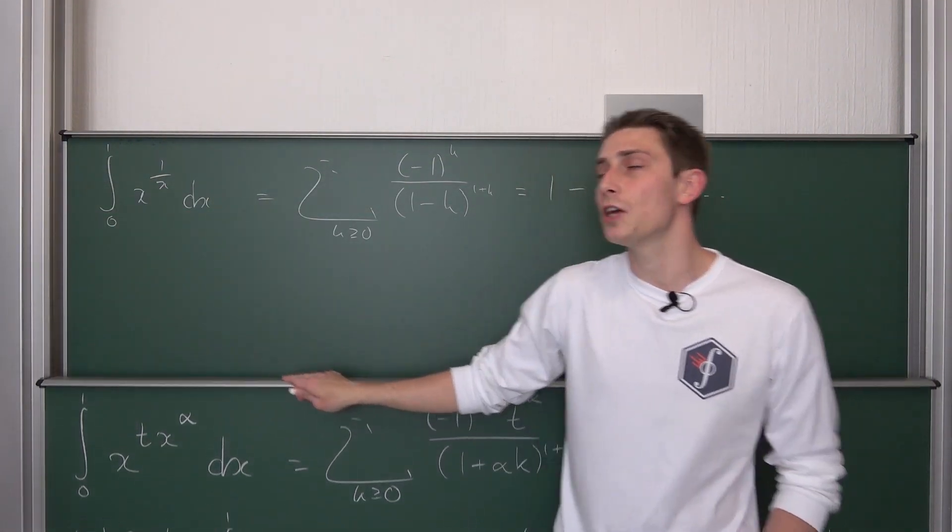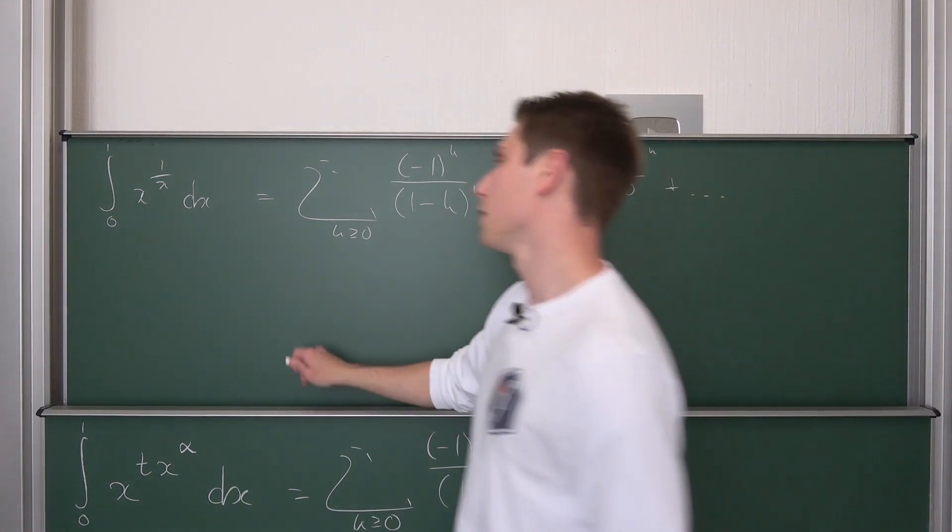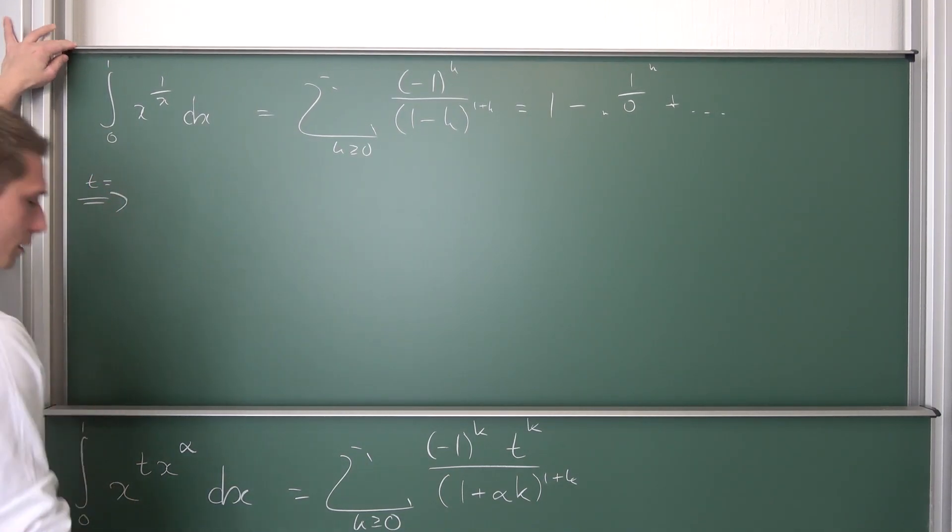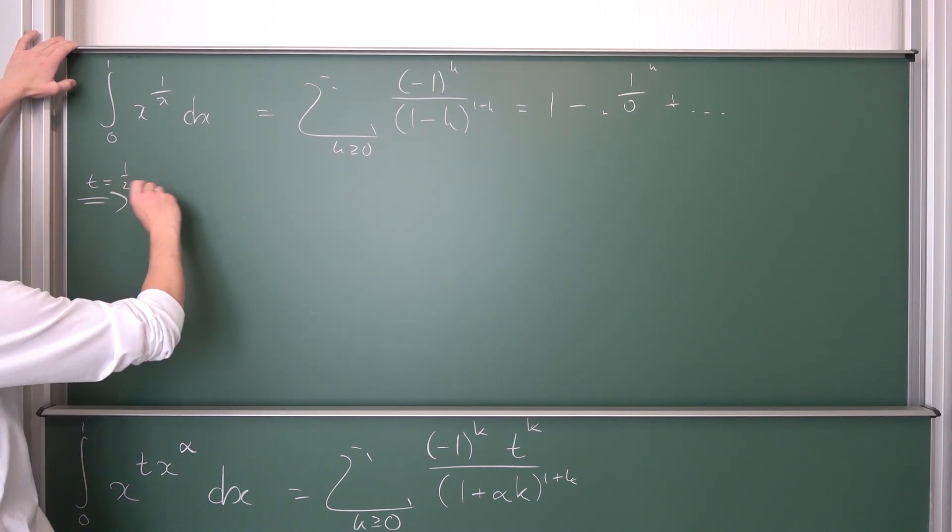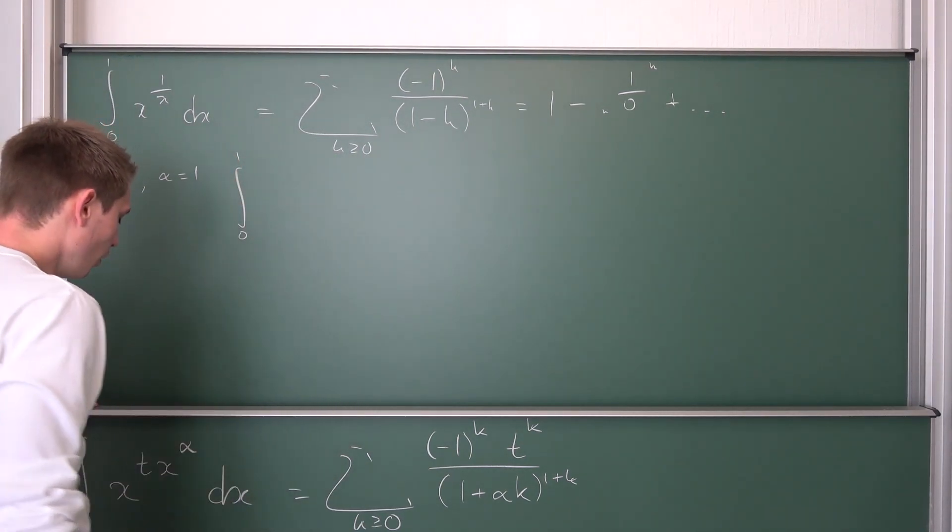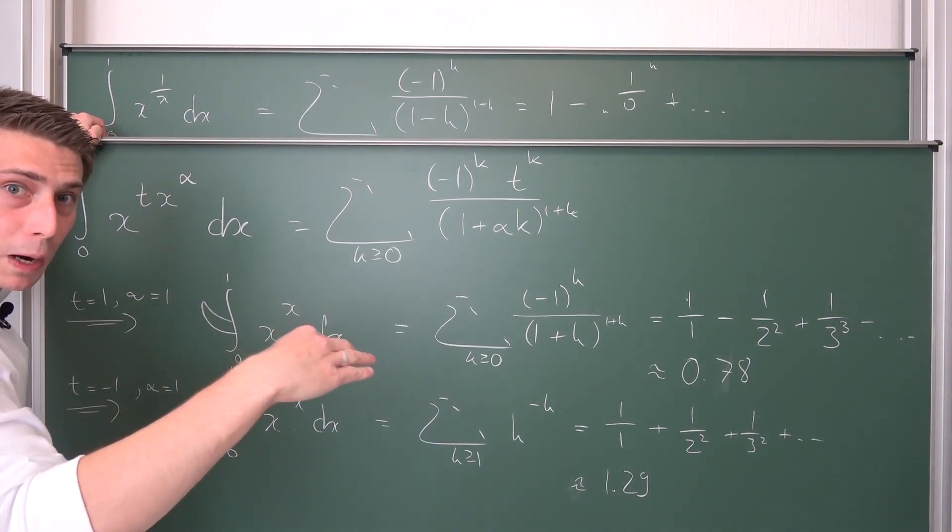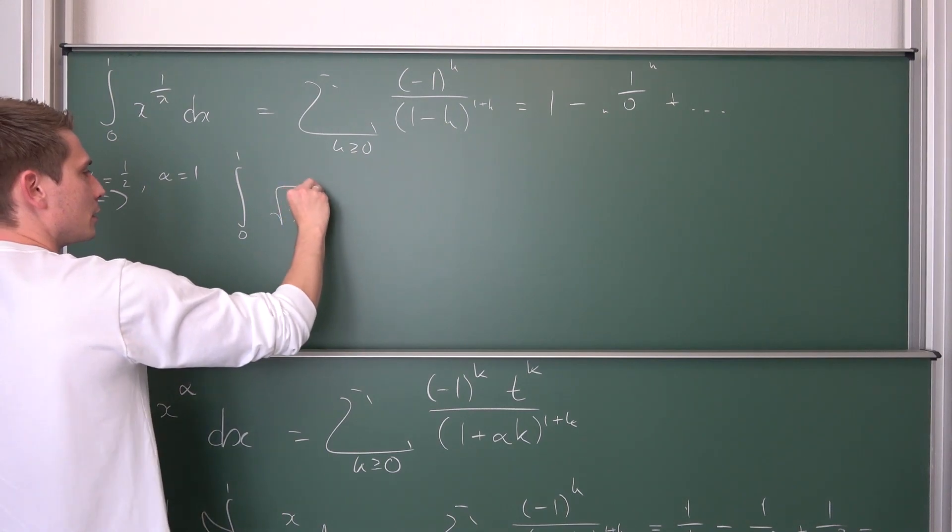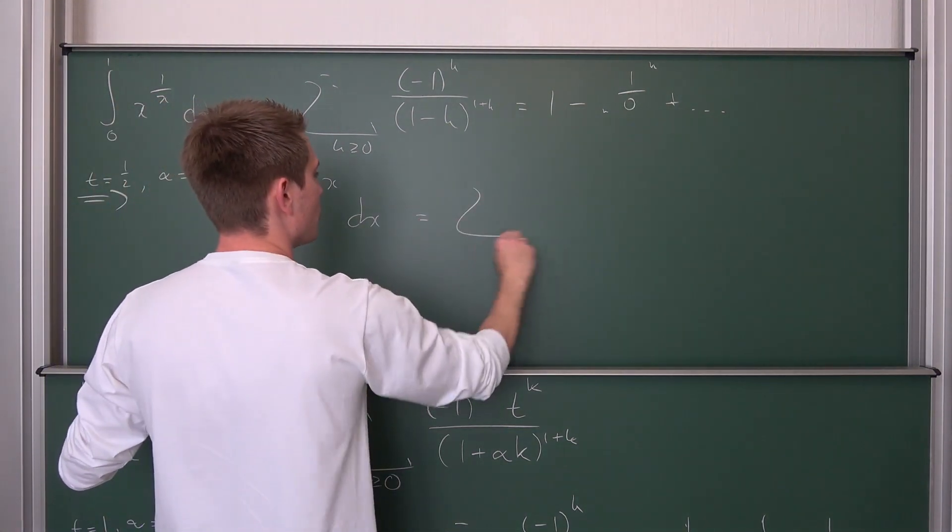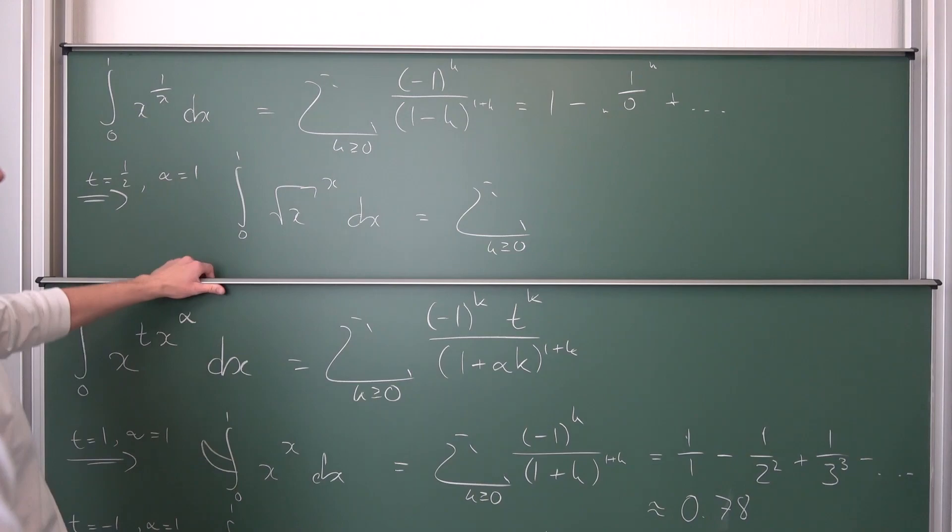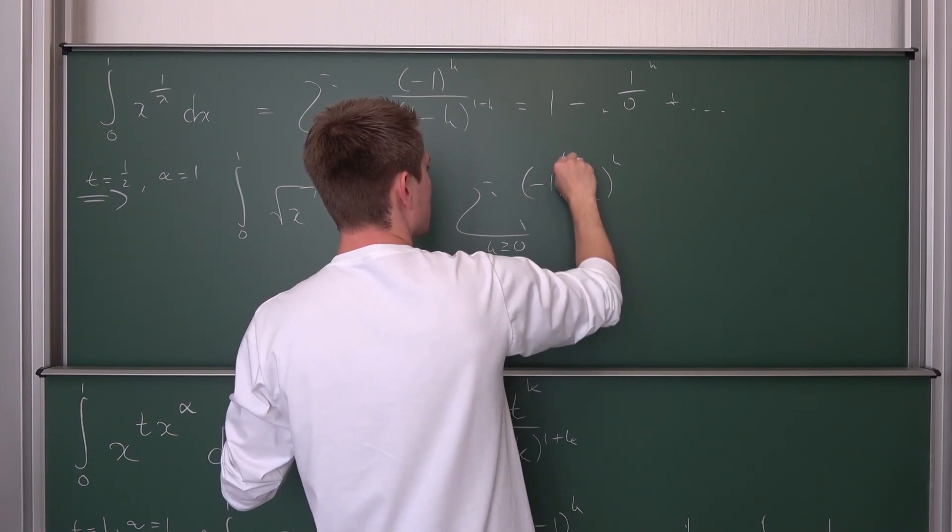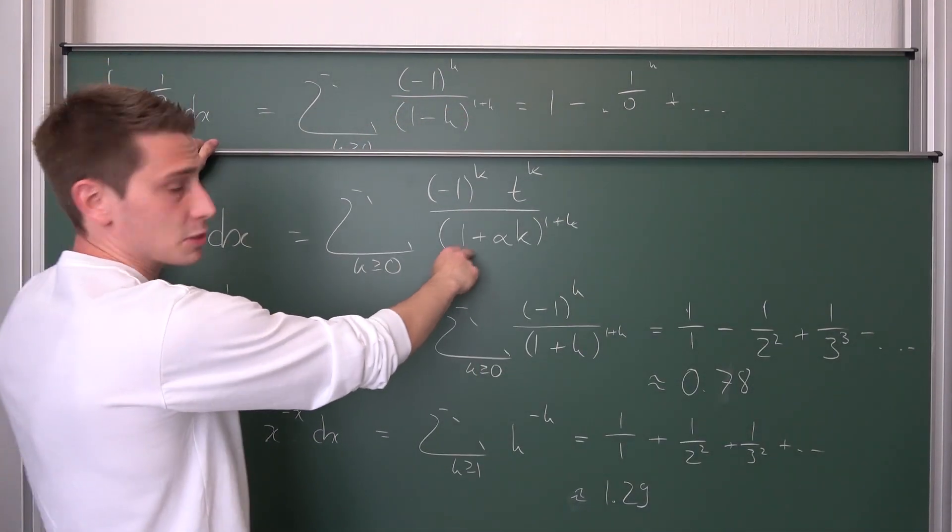Next up are a few rooty things, a few really rootful integrals. Let us take a look at, for example, the case where t is equal to 1 half and our alpha is equal to 1. What is it going to be? It's going to be the integral from 0 to 1 of x to the 1 half power to the x power, meaning it's the square root of x to the x power, integrated with respect to x. Well, let us plug everything in into our sum formula that we are having here. So, t is 1 half, meaning it's 1 half to the kth power, negative 1 to the kth power over, well, 1 plus k to the 1 plus k.